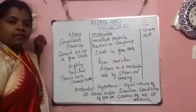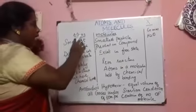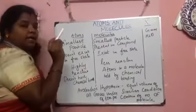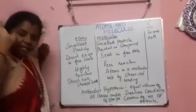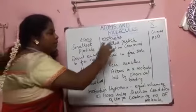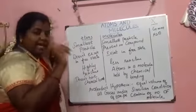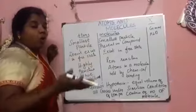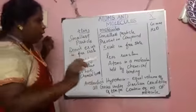Next, we have to see the difference between atoms and molecules. Atoms are the smallest particle present in an element. Molecules are also the smallest particle, but they are present in a compound. Atoms are present in a single element, while a molecule is present in a compound — a combination of elements.